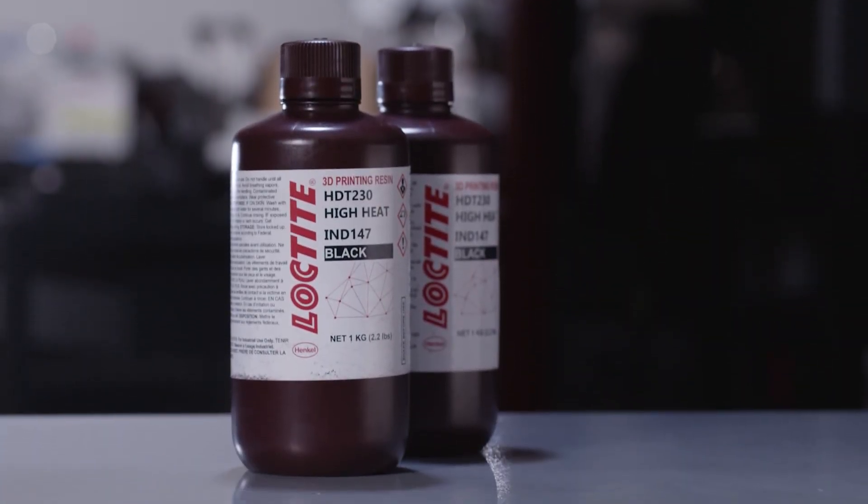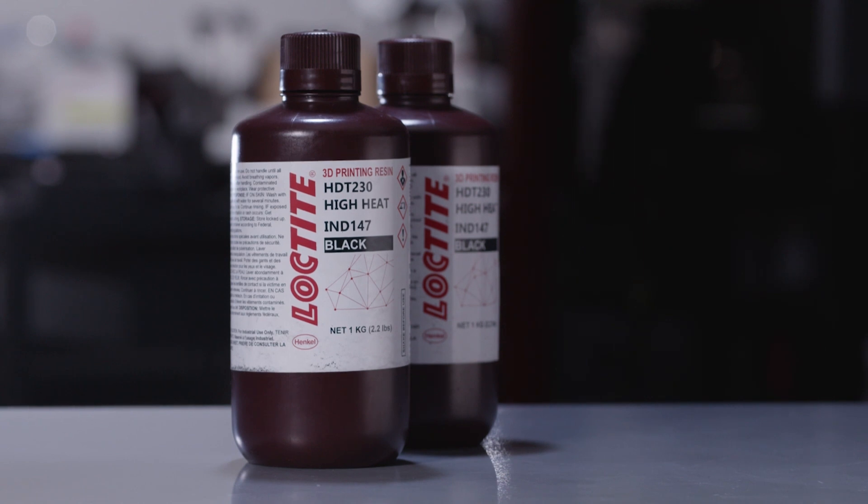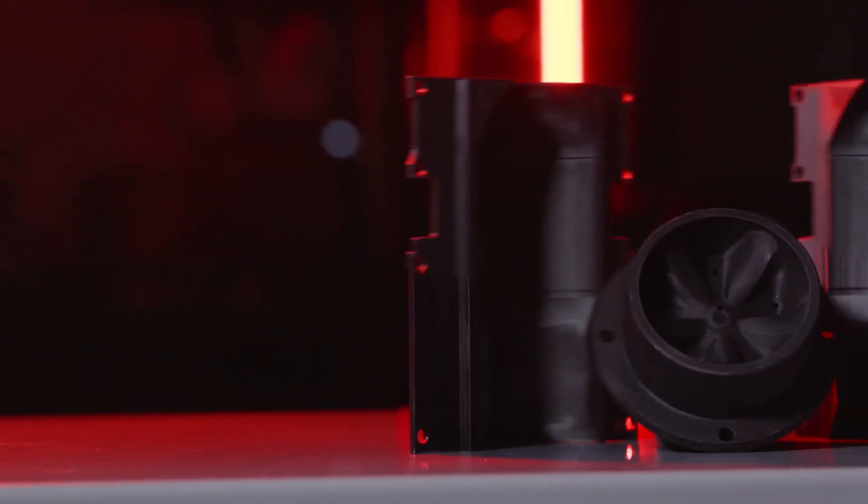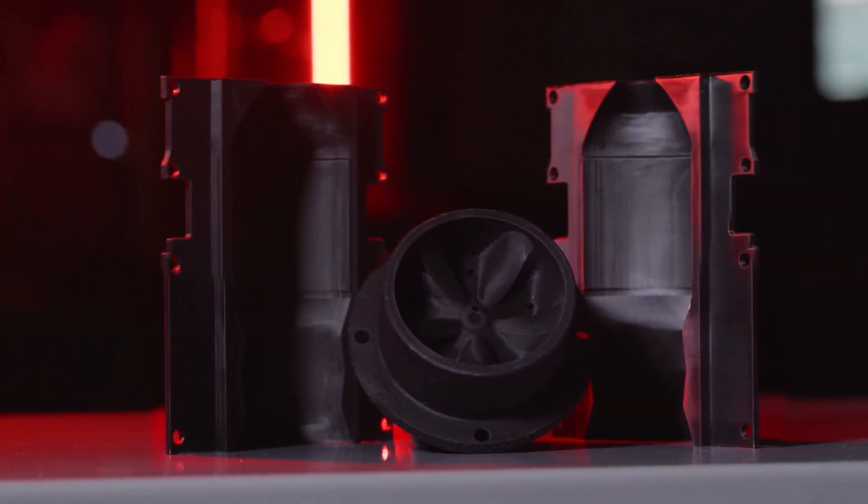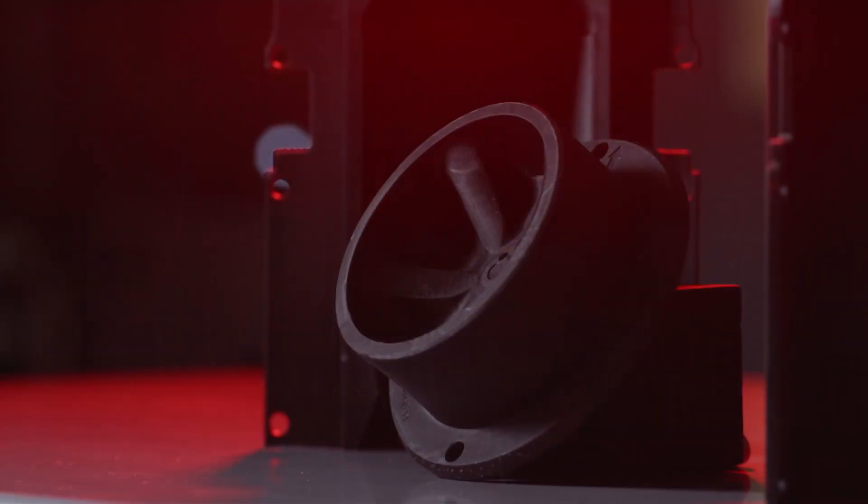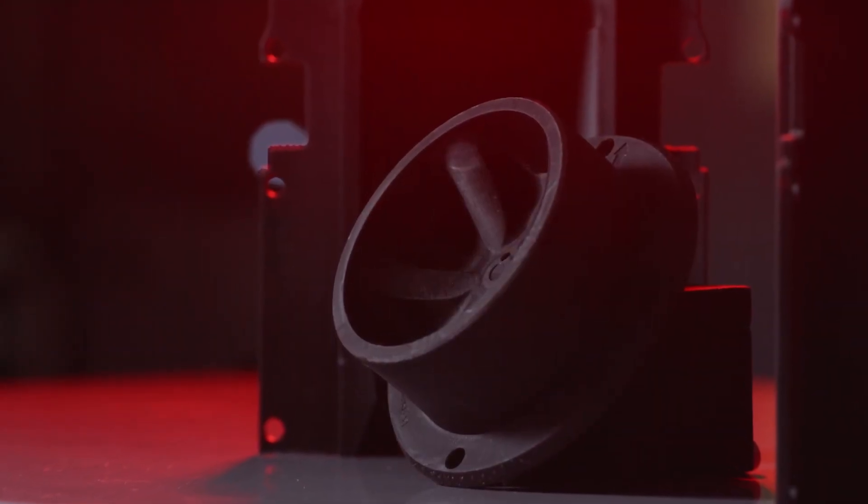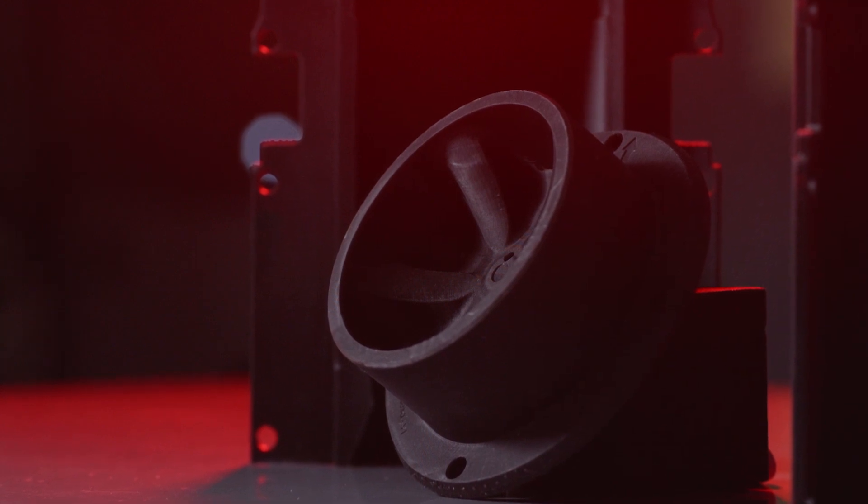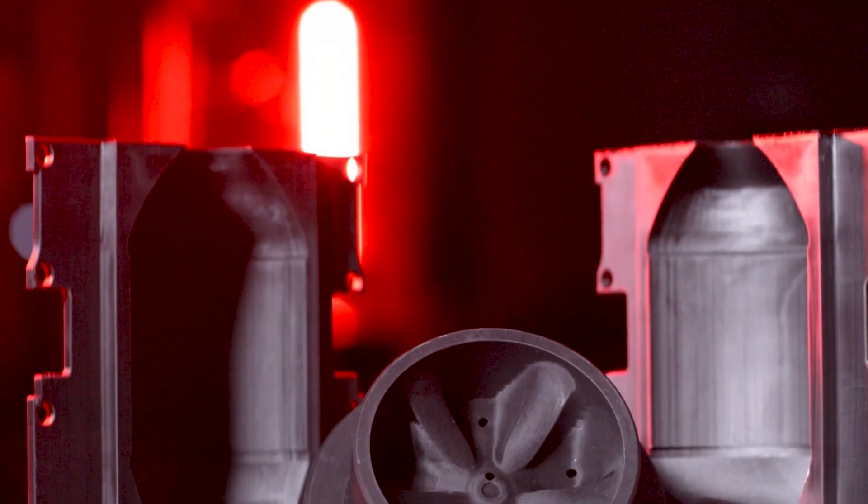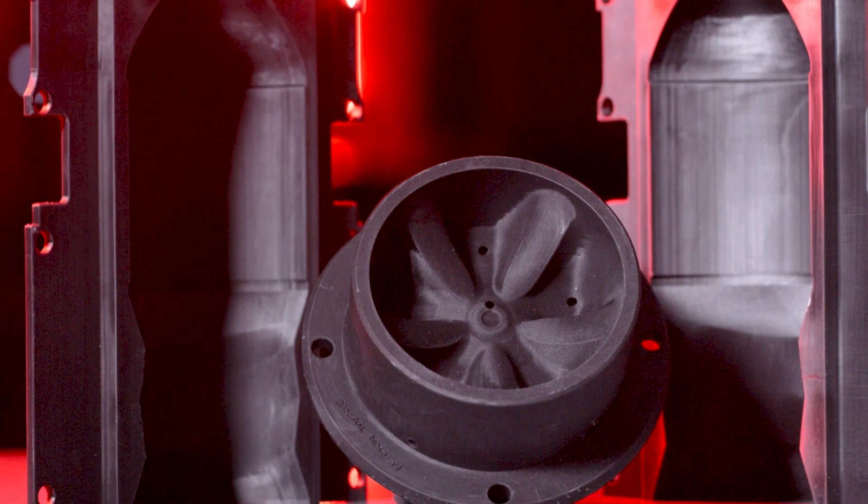Loctite 3D IND 147 HDT 230 High Heat is a tough resin designed for tooling and molding applications due to its high temperature resistance withstanding up to 230 degrees Celsius and high stiffness. It is tough with good dimensional stability and has a good surface finish.